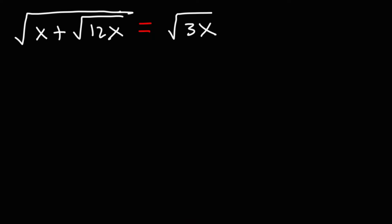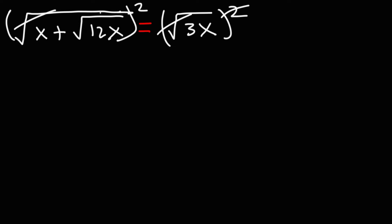Now let's work on another example — somewhat similar but slightly different. Feel free to pause the video and try this example. The first step is going to be the same: we're going to try to get rid of the outer radical on the left by taking the square of both sides. So on the left, we're just going to have x plus the square root of 12x, and that's going to equal 3x.